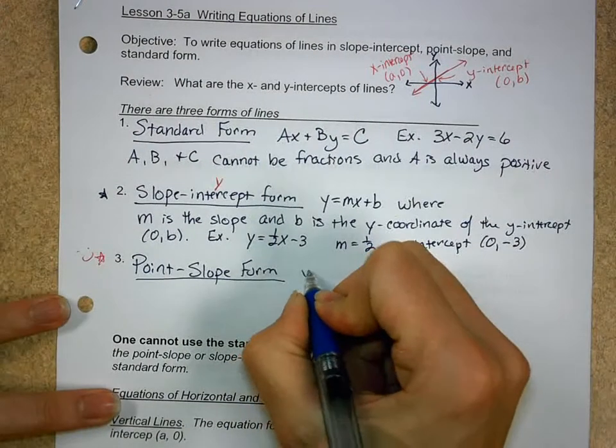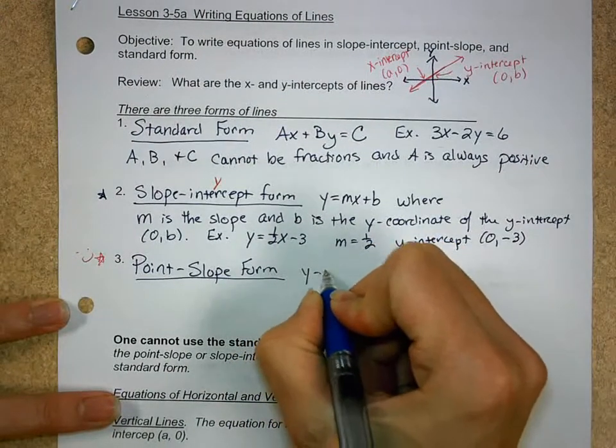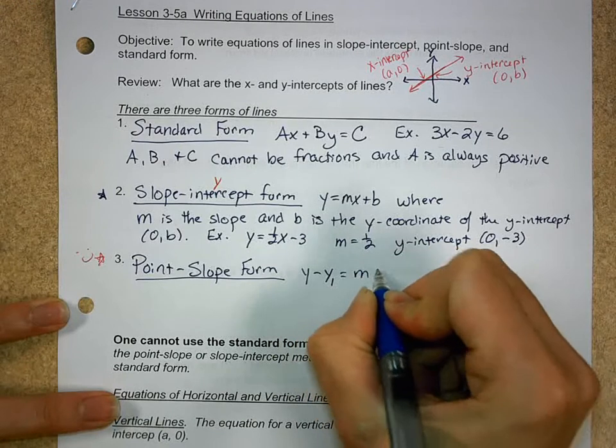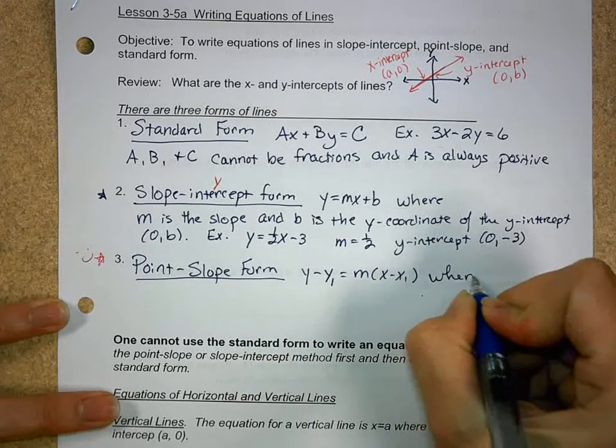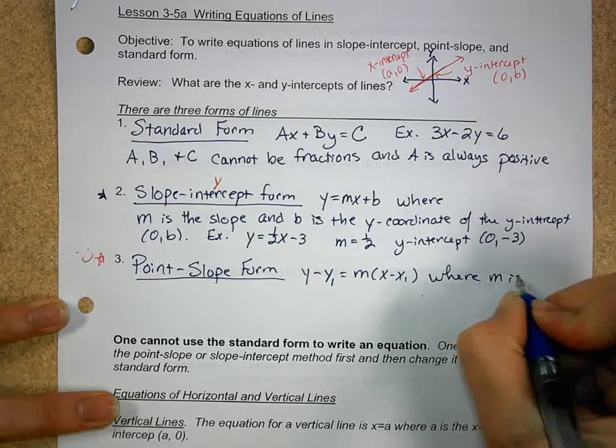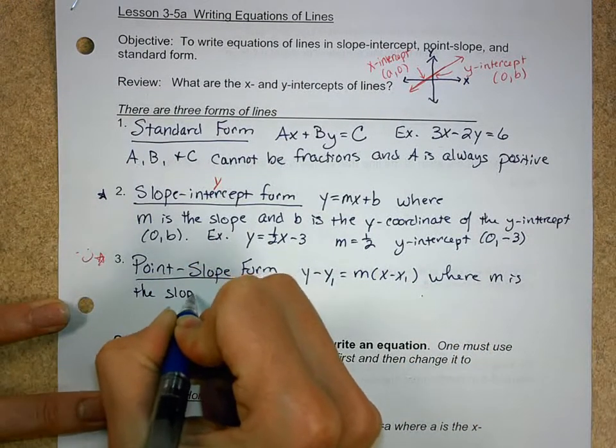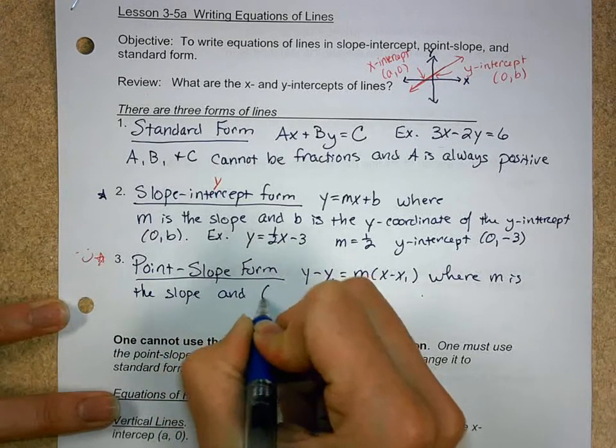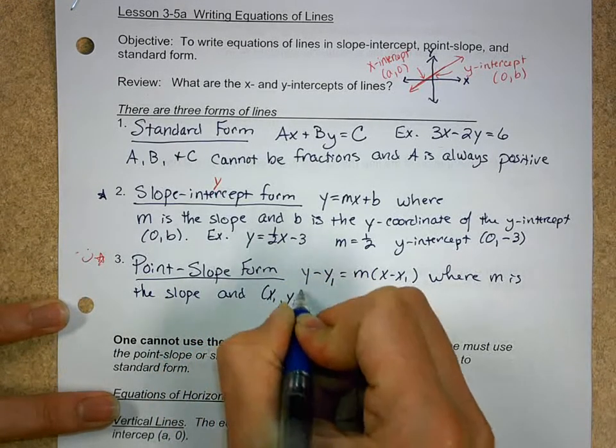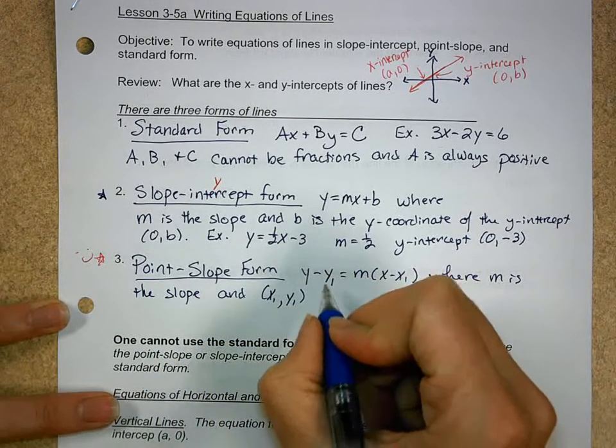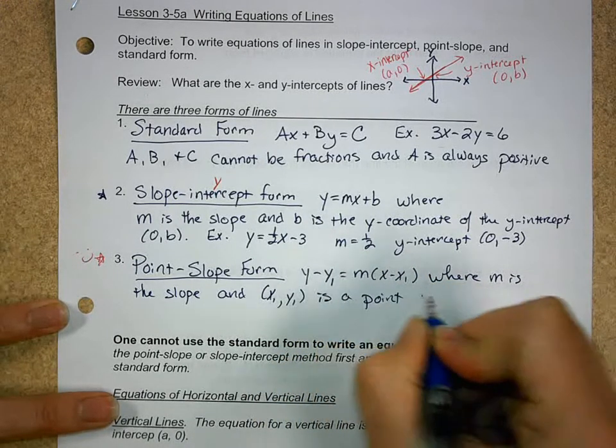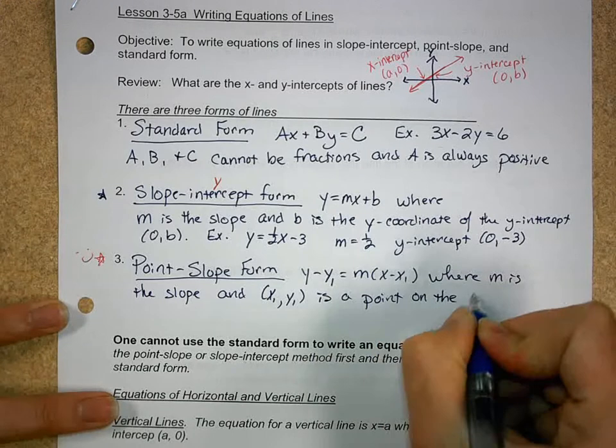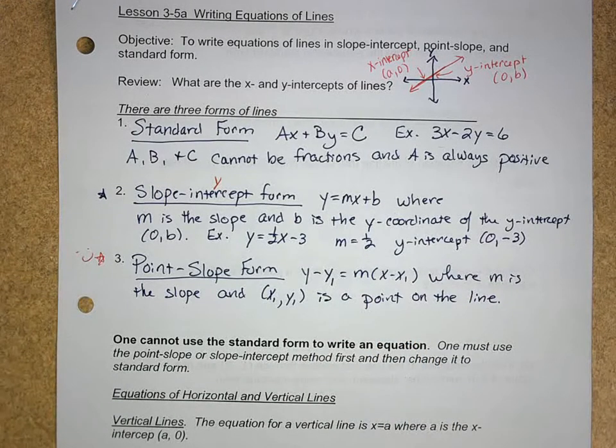So the answer is going to be y - y1 = m(x - x1), where m is the slope and x1 and y1 is a point on the line.